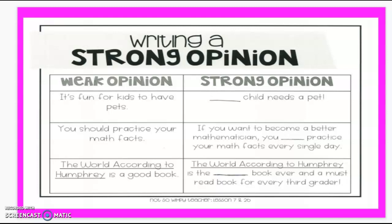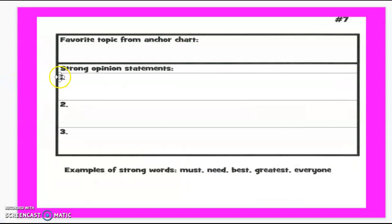Here are your choices once again if you need to look back at them. Choice one is about every child needing their own pet. Choice two is the one about becoming a better mathematician. And choice three is the one about The World According to Humphrey being the very best book ever. So you are going to choose one of these three and then write your own strong opinion statements about whichever topic you chose.